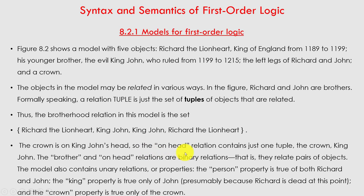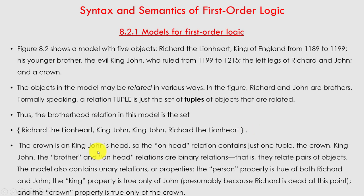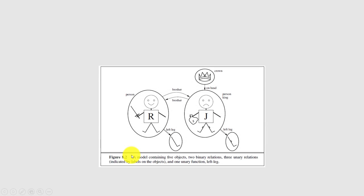The brotherhood relation in this model is the set {(Richard the Lionheart, King John), (King John, Richard the Lionheart)}. The crown is on King John's head, so the on-head relation contains just one tuple: (crown, King John). Brother and on-head are binary relations — they relate pairs of objects. The model also contains unary relations or properties: the person property is true of both Richard and John; the king property is true only of John; and the crown property is true only of the crown.